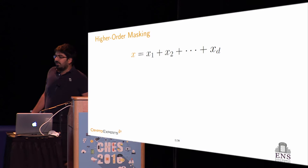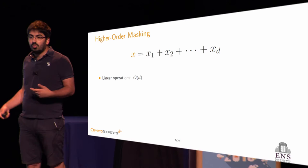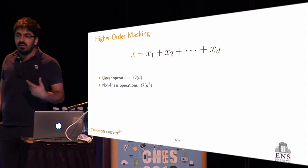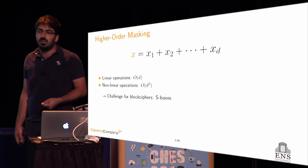In the presence of masked variables, how to perform an operation? Linear operations are linear in the masking order D, so quite easy to perform, whereas nonlinear operations are quadratic in the masking order. Therefore, when we want to protect a block cipher with higher order masking, the main challenge is to efficiently evaluate the nonlinear part, namely to efficiently evaluate the S-boxes.